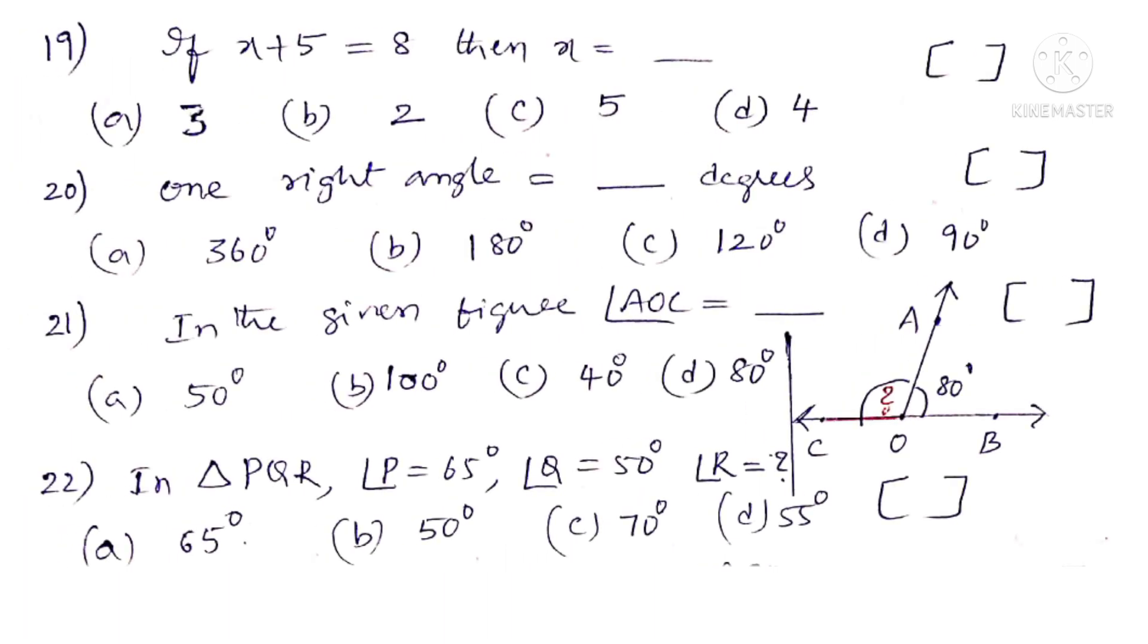Now 19th question. If x plus 5 is equal to 8 then x is equal to dash. Observe that 3 plus 5 is equal to 8 on the right hand side. So the correct choice is A.